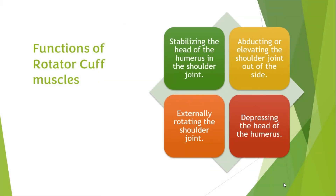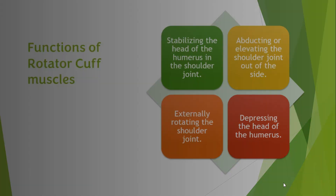Functions of the rotator cuff muscles include: stabilizing the head of the humerus in the shoulder joint; abducting or elevating the shoulder joint out to the side; externally rotating the shoulder joint; and depressing the head of the humerus.